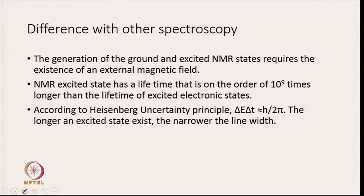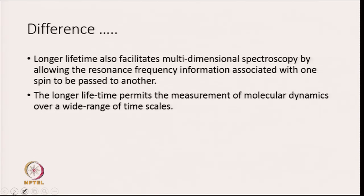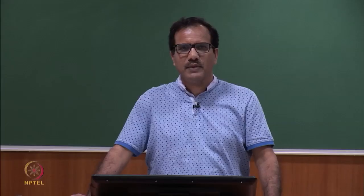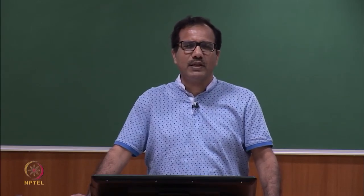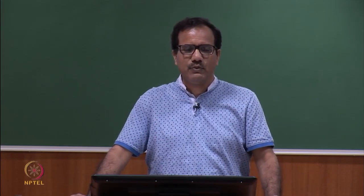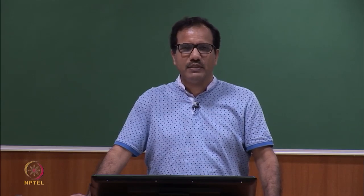If you remember the Heisenberg uncertainty principle, it tells you that the longer an excited state exists, the narrower the line width. So NMR is a very high resolution technique. Longer lifetime not only ensures better resolution, it also facilitates multidimensional spectroscopy by allowing the resonance frequency information associated with one spin to be passed to another — that is why you see 2D, 3D, and 4D NMR. The longer lifetime also permits measurement of molecular dynamics over a wide range of time scales. These are a few of the advantages associated with NMR measurements.